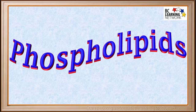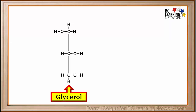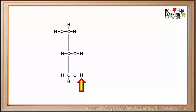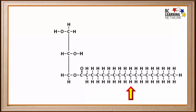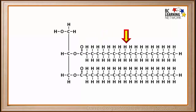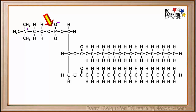Here we'll examine another type of lipid called phospholipids. Like fats, phospholipids have a backbone consisting of a glycerol molecule. In a phospholipid, one H atom is replaced by a fatty acid and another H atom is replaced by another fatty acid. Instead of being replaced by another fatty acid, the third H is replaced by a group containing phosphate, or PO4.